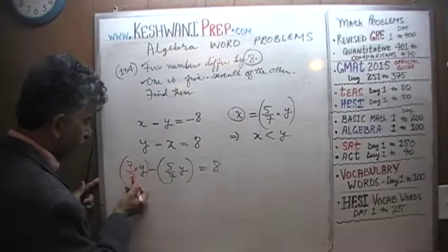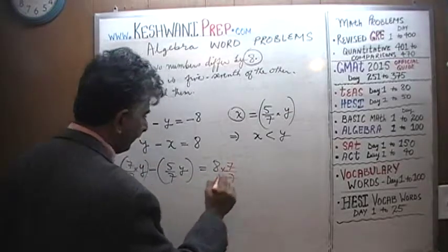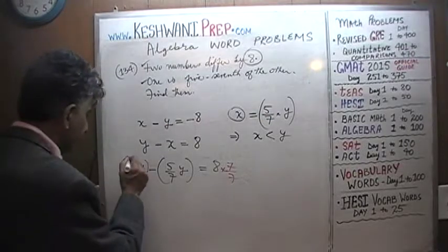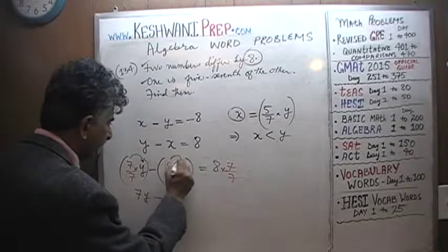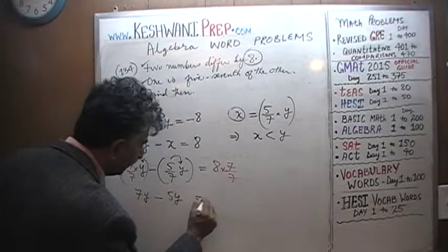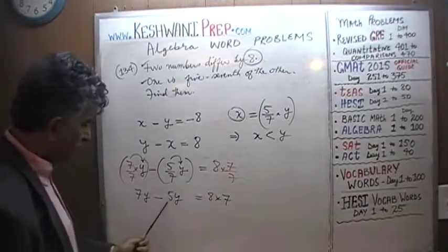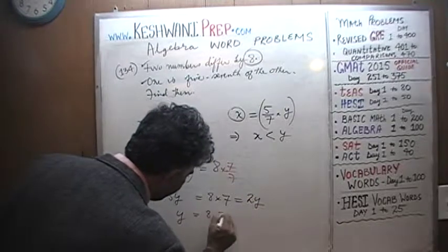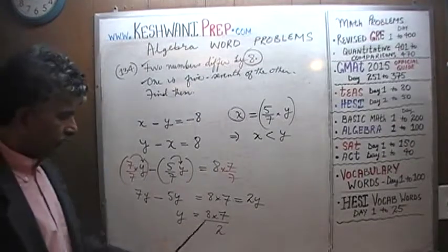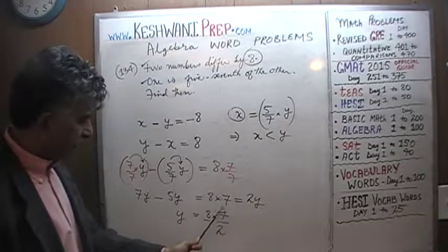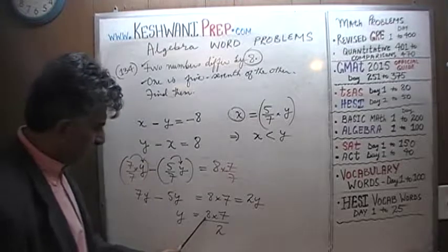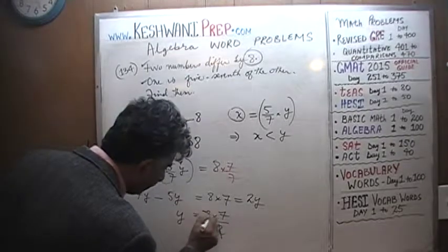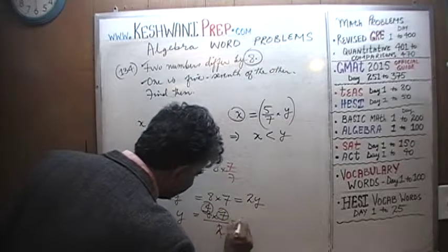Now the entire equation has a denominator of 7, so the 7 plays no role. It becomes 7y minus 5y equals 8 times 7. That gives 2y equals 56. Dividing both sides by 2, y equals 8 times 7 over 2. Dividing top and bottom by 2, 8 becomes 4, so y equals 4 times 7, which is 28.